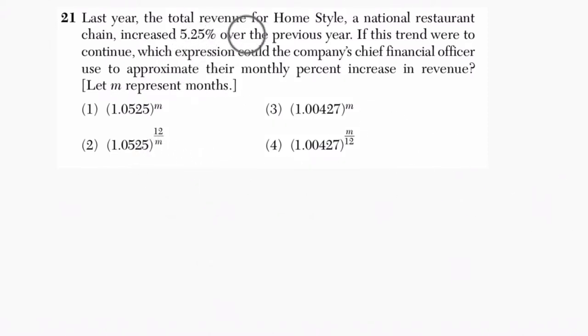It says last year the total revenue for Homestyle, a national restaurant, increased by 5.25% over the previous year. If this trend were to continue, which expression could the company's chief financial officer use to approximate their monthly percent increase in revenue, where M is months.